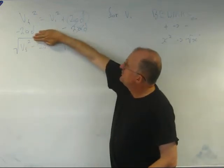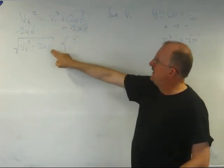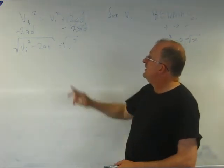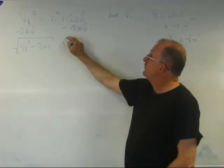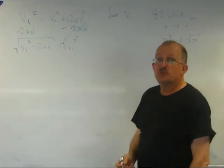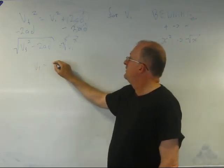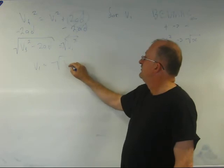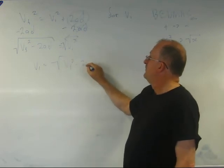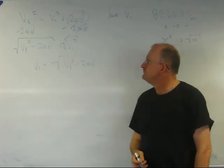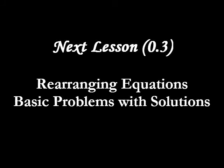So now, the square root cancels out the squared. So now, Vi equals the square root of Vf squared minus 2ad. That is complete.